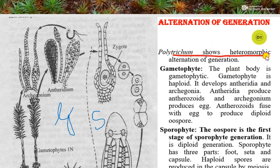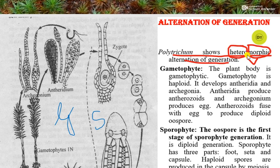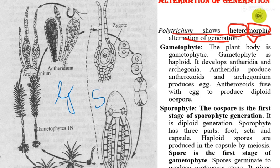Polytrichum shows heteromorphic alternation of generation. Why is it known as heteromorphic? Hetero means different and morphic means morphological. That means we will get different morphological forms in the life cycle of Polytrichum, and these different forms are the gametophyte and the sporophyte.